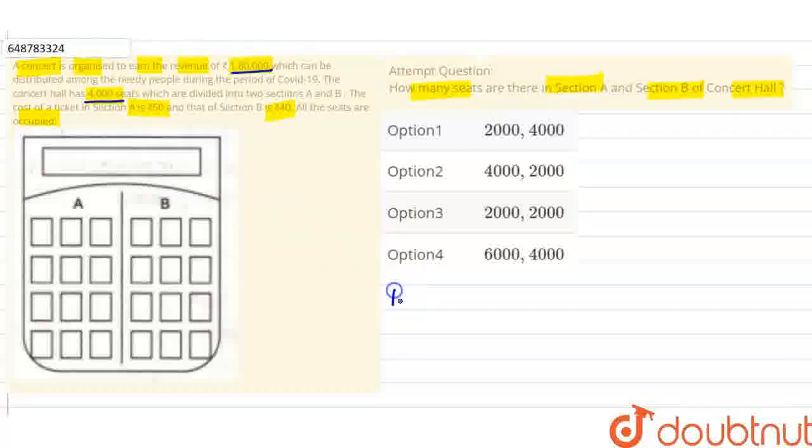Let's say section A has x seats and section B has y seats. The total is 4000 seats, so x plus y equals 4000. This is our first equation.